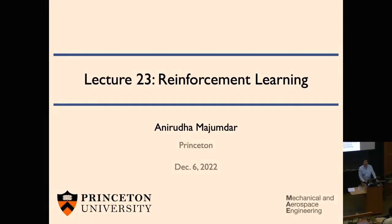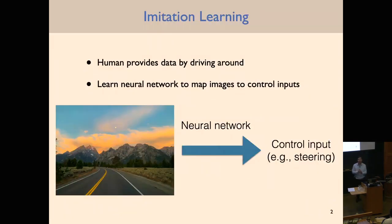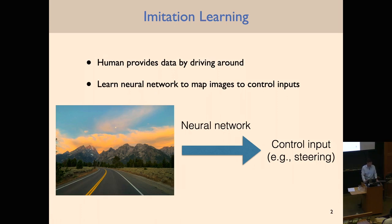The plan for today is to cover reinforcement learning, which is going to be basically the last technical topic we cover in this course. In the previous lecture, we talked about imitation learning — the idea that you collect some demonstrations, some expert data from a human, and then you learn a neural network that tries to mimic what the human is doing.